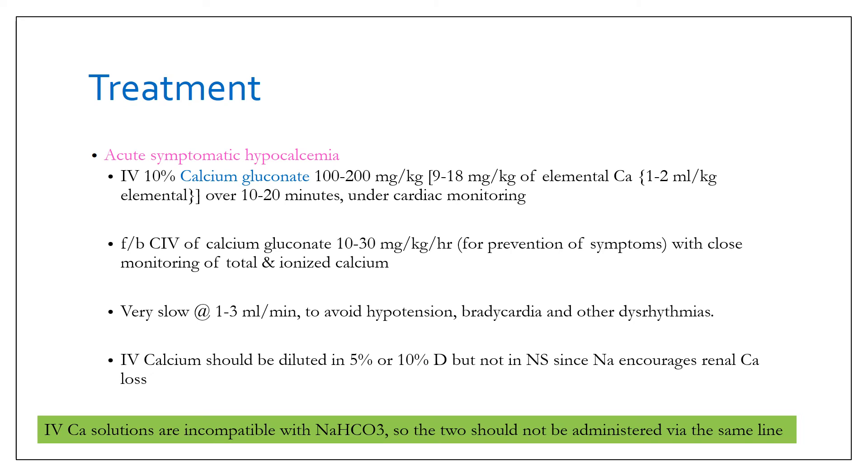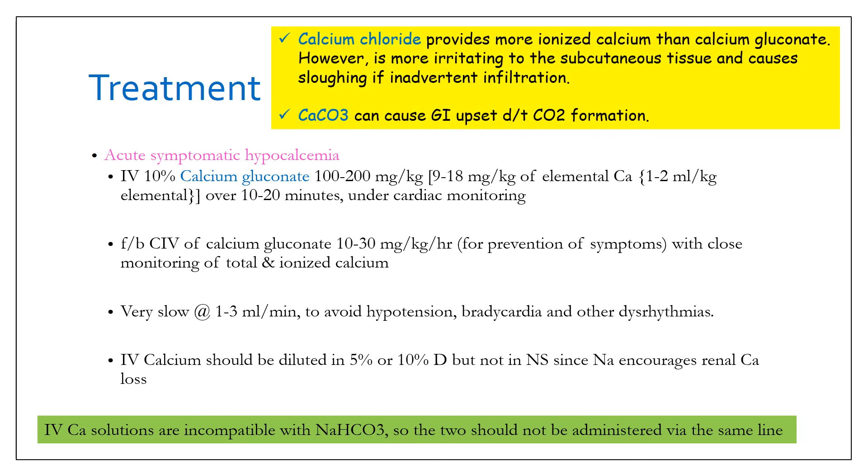Now a word about the formulations available: calcium gluconate is the preferred formulation. Calcium chloride provides more ionized calcium than calcium gluconate but it is more irritating to the subcutaneous tissue and causes sloughing if inadvertent infiltration occurs. Calcium carbonate also causes GI upset due to carbon dioxide formation, so it is also not used.